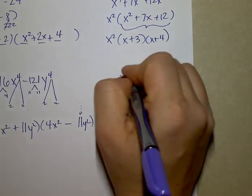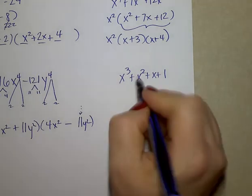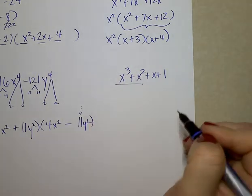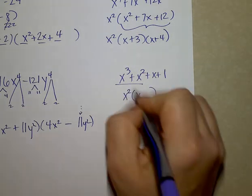The last problem on the front page. What can I take out of the first two? This is factoring by grouping. I can take out a maximum of x squared. I'd be left with x plus 1.